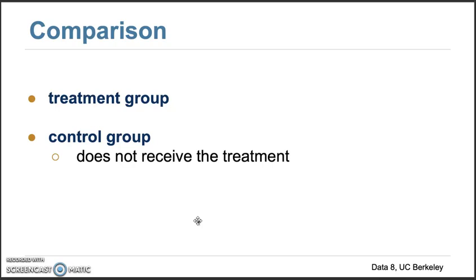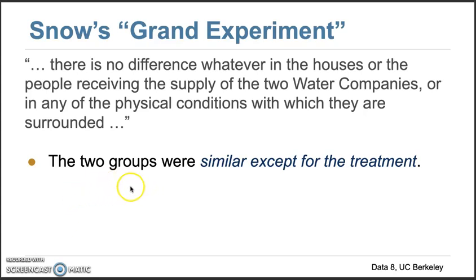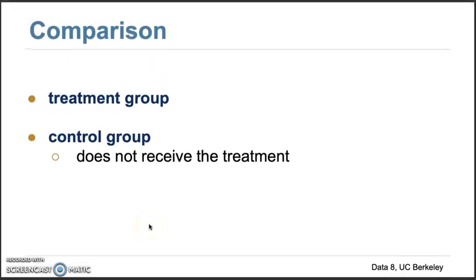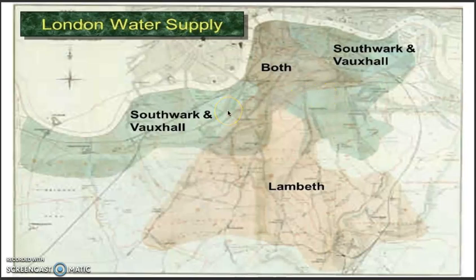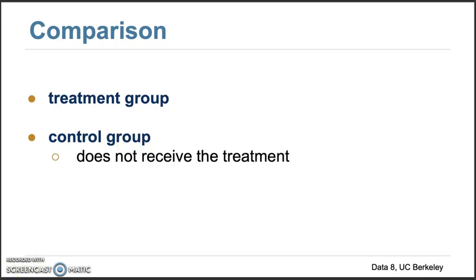From this data, we want to break things into two groups. One group is the treatment group — the group that received the treatment. The other is the control group — the group that did not receive the treatment. These two groups are identical in every way except for the treatment. In this case, the only difference is the water source. All people had the same smells, environment, income, and living conditions — the only difference was where their water came from. So we can break them into a treatment group and a control group.